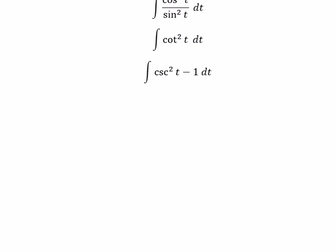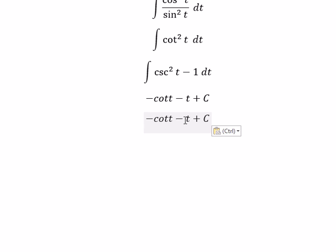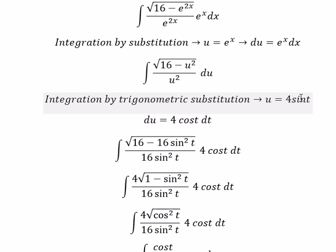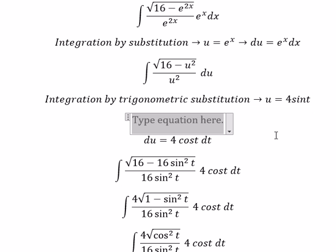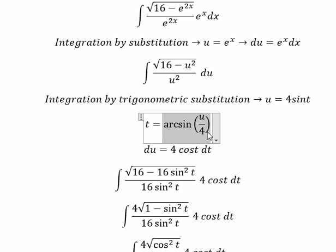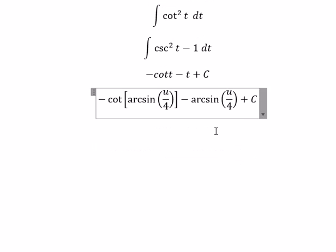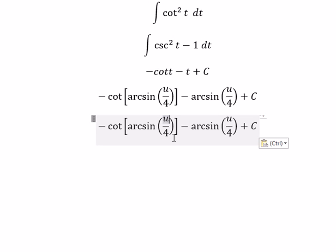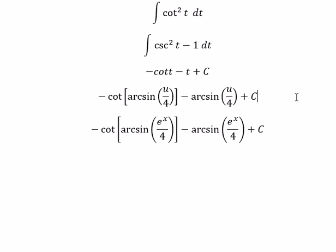Now we can get the final answer. The integral of cosecant t squared gives us negative cos t, and the integral of 1 gives us t. We need to change t back to x — first we change t into u: we divide both sides by 4 and get t equal to arcsin of u divided by 4. We put this in here, and then we change u back to e to the power of x. That's it — the end, thank you for watching.